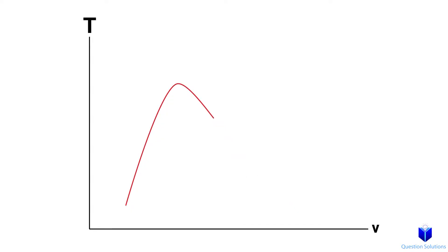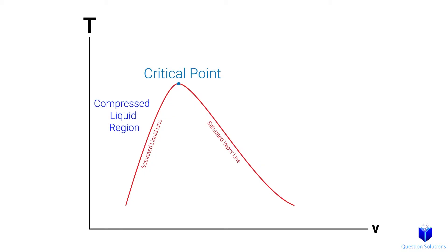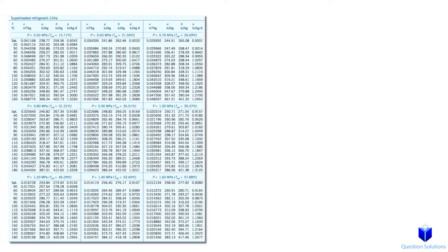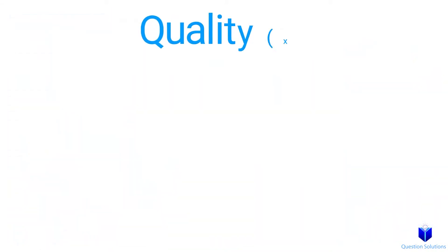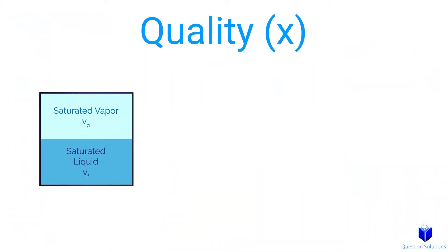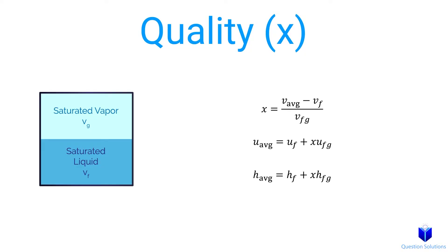This is what a general temperature versus specific volume diagram looks like. Lastly, you should remember things like quality, how to use property tables, and more. To quickly recap, quality is the ratio of the mass of the vapor to the total mass of the mixture. The equations related to it are these. This topic is covered in detail in the pure substances and property tables video, so if you need a refresh, I highly encourage you to take a look.